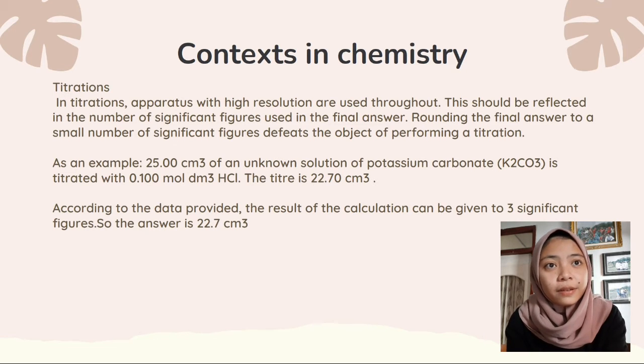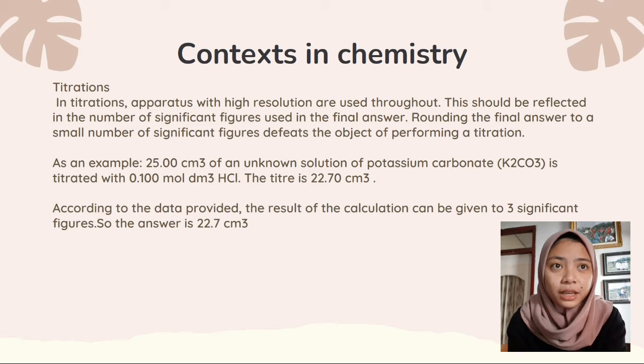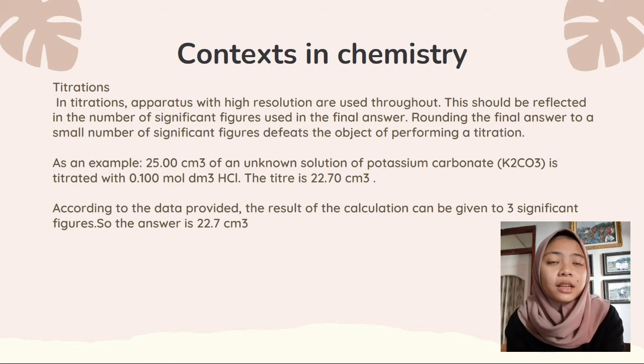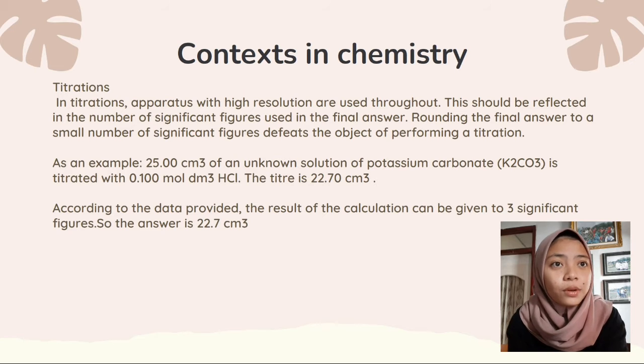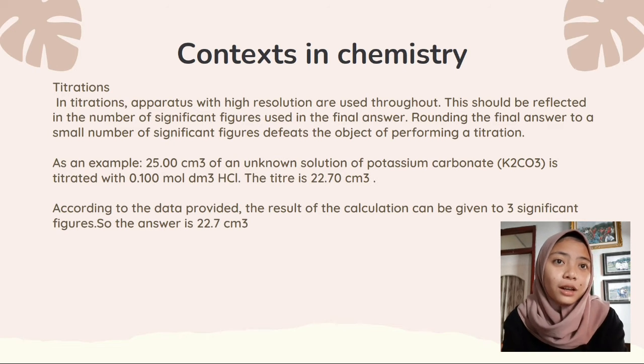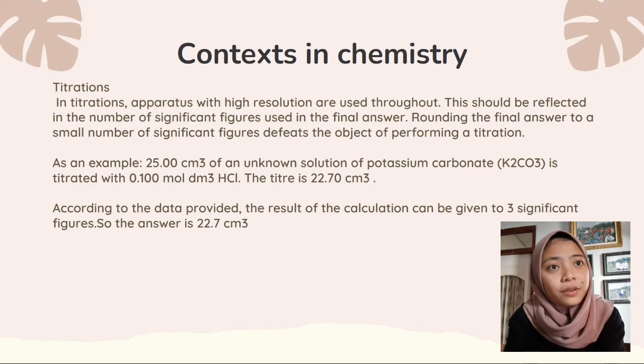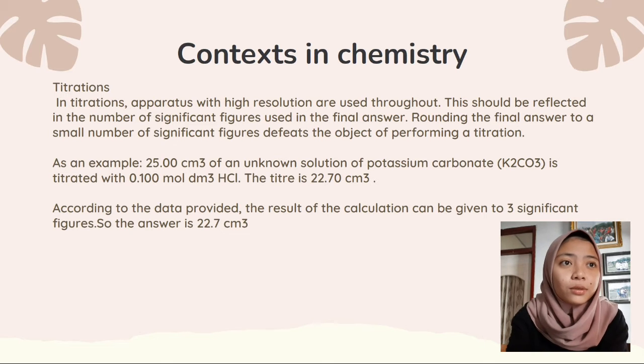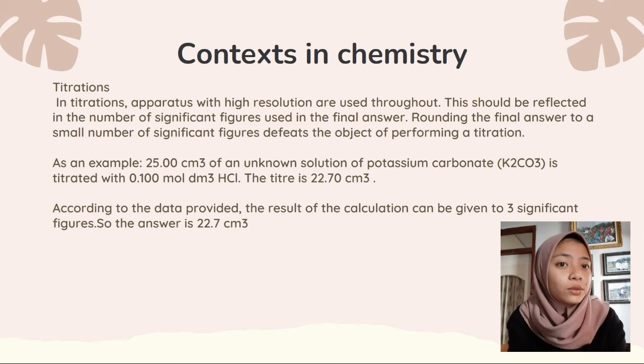As an example, 25.00 cm³ of an unknown solution of potassium carbonate (K₂CO₃) is titrated with 0.100 mol/dm³ HCl. The titre is 22.70 cm³. According to the data provided, the result of the calculation can be given to three significant figures. So, the answer is 22.70 cm³.